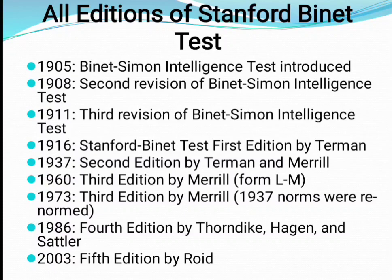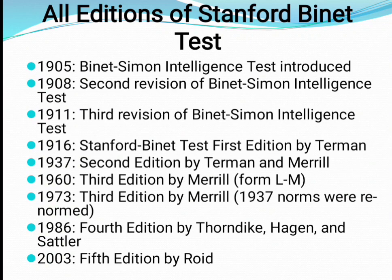In 1937, the second edition of the Stanford Binet intelligence test was published by both Terman and Merrill. In 1960, the third edition was published by Merrill with the introduction of single form LM. In 1973, the third edition was re-normed by Merrill. In 1986, the fourth edition was published by Thorndike, Hagen, and Sattler. The current fifth edition was published in 2003 by Roid.